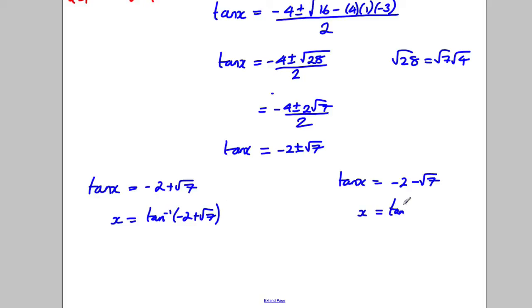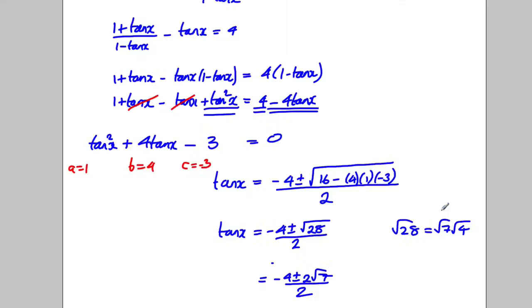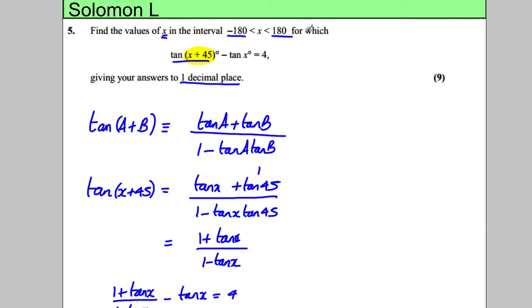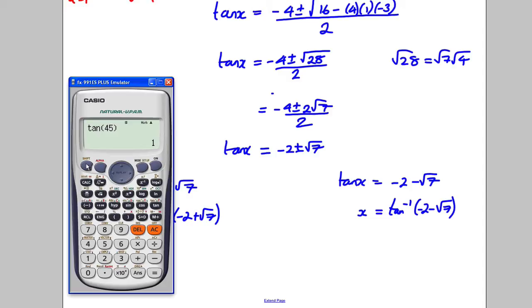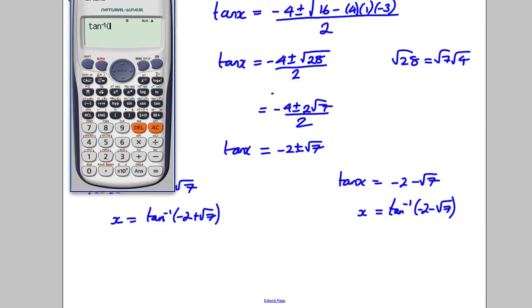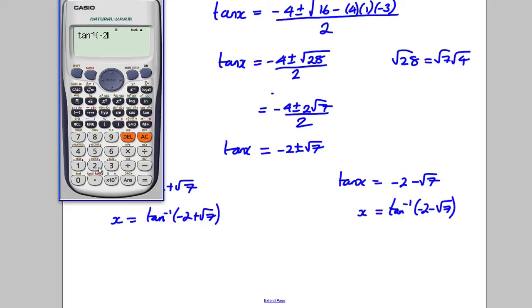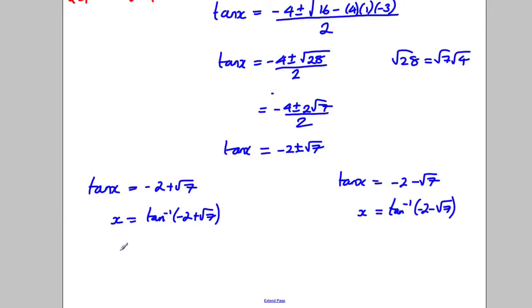Time to get the calculators out. We're looking for degrees in between negative 180 and 180 to 1 decimal place. So calculator out, degrees mode. Inverse tan of negative 2 plus square root 7, and I get 32.9 degrees to 1 decimal place for that one.